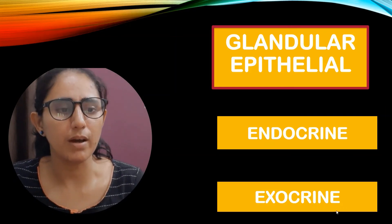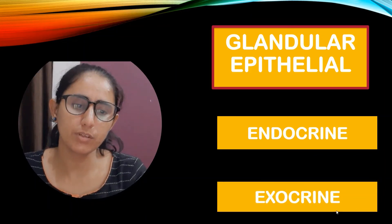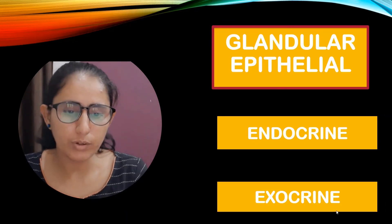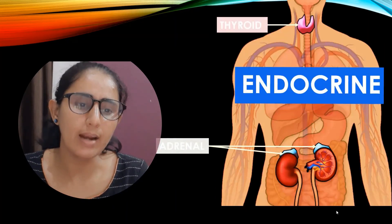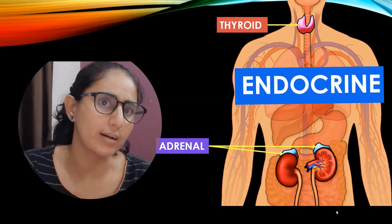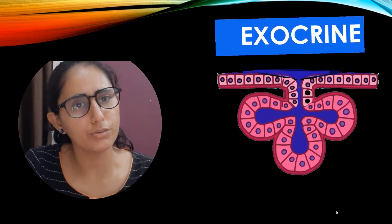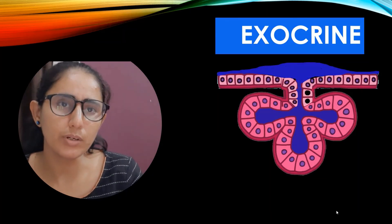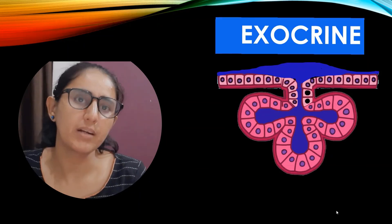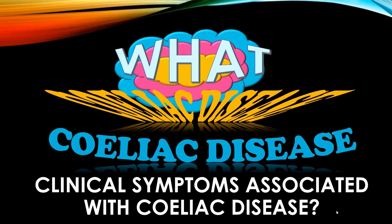Now discussing glandular epithelium: there are two types — endocrine and exocrine. Endocrine glands release their secretions into the bloodstream, where they are transported to other parts of the body; examples include the thyroid and adrenal glands. Exocrine glands release their secretions into ducts that empty onto a surface or into a cavity; for example, the pancreas secretes digestive enzymes that are emptied into the small intestine.